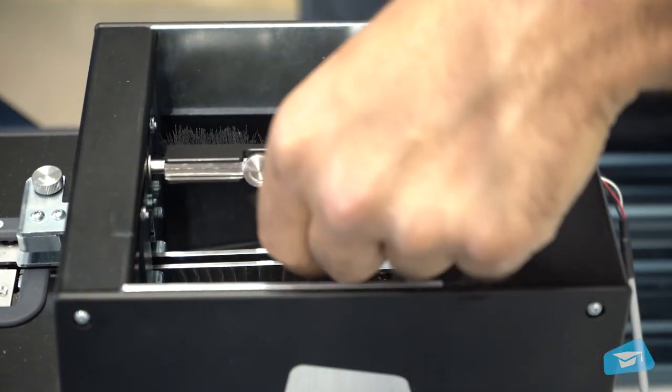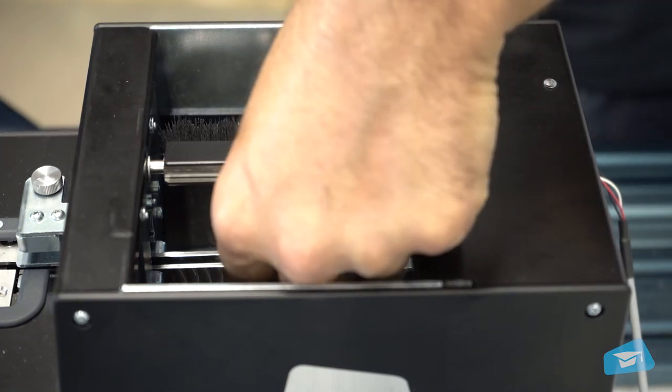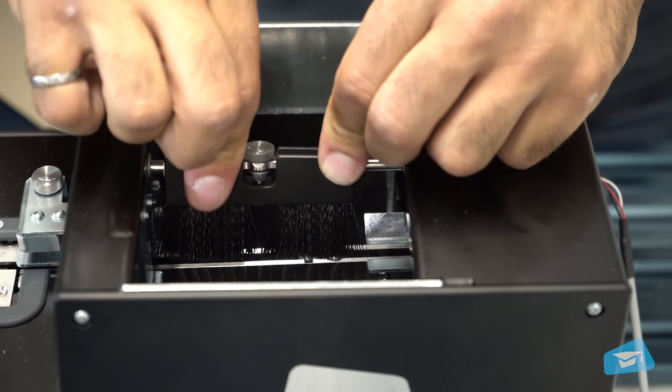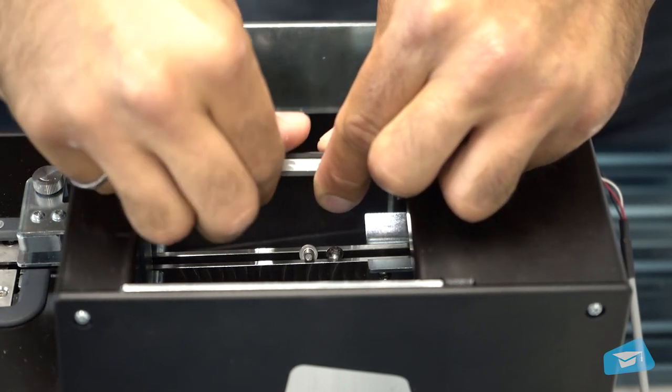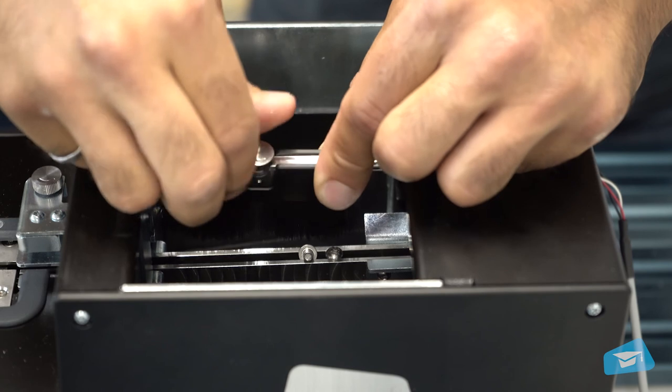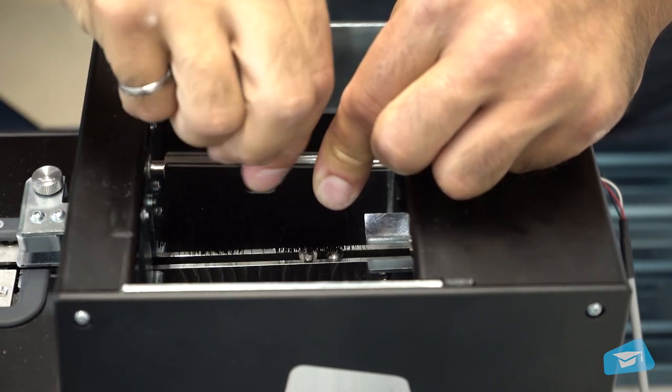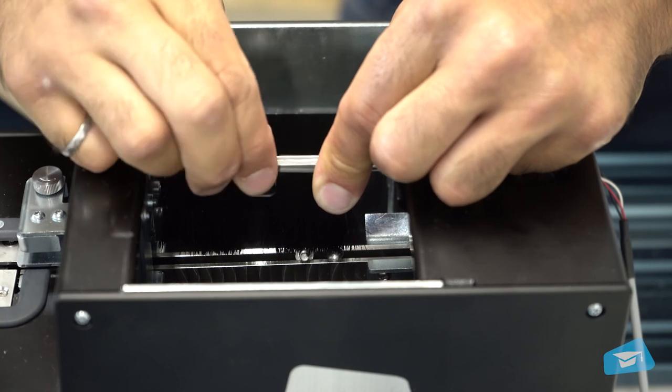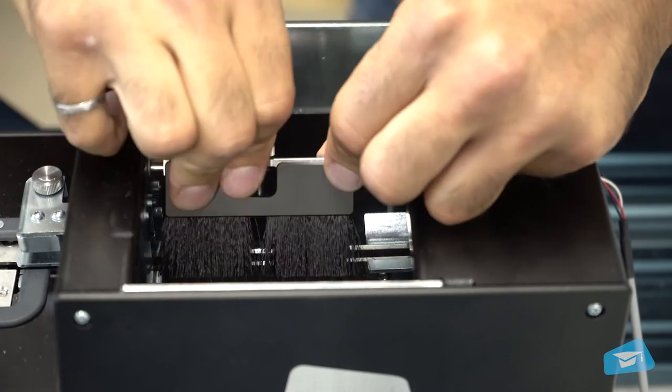The third element to adjust is brush height. This adjustment aims to effectively remove screws that are not properly engaged in the rail. Turn the knob so that the brush assembly barely comes into contact with the screw heads and sweeps off any screw that does not sit properly on the rail.